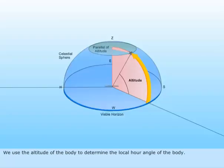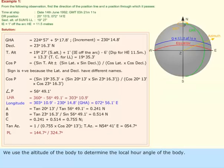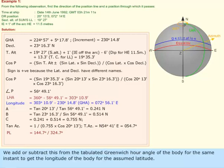We use the altitude of the body to determine the local hour angle of the body. We add or subtract this from the tabulated Greenwich hour angle of the body for the same instant to get the longitude of the body for the assumed latitude.